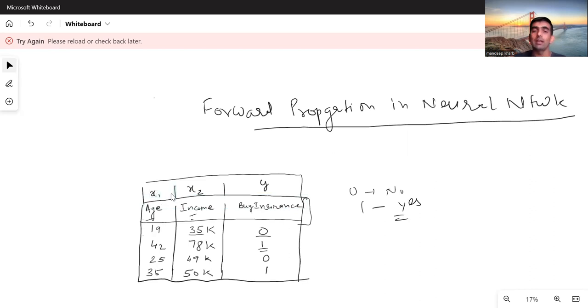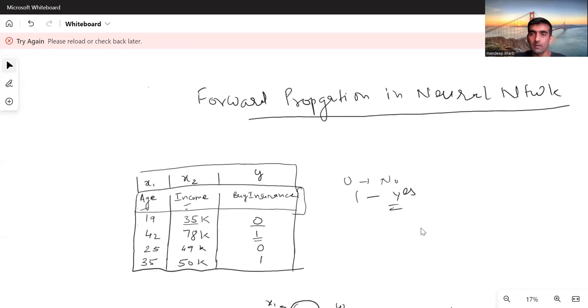You can see that I have also written x1, x2, and y as variable names. x1 for the age, x2 for the income, and y is for my target variable. So this is the background or summary.